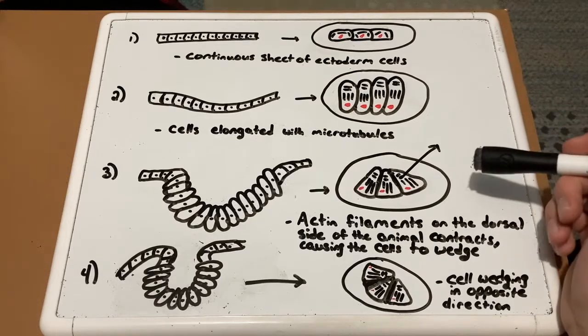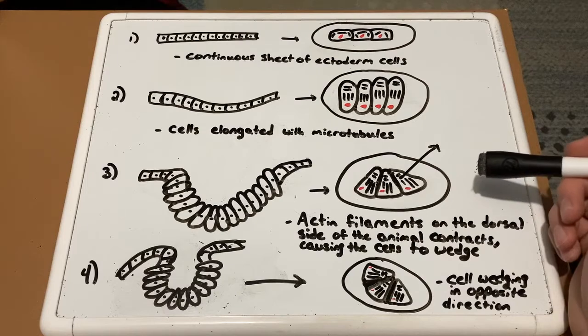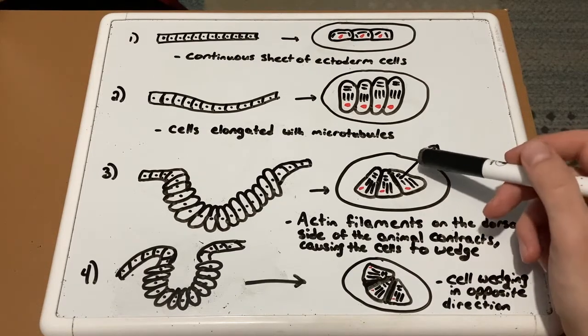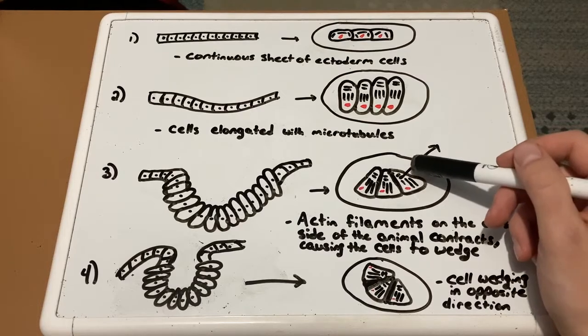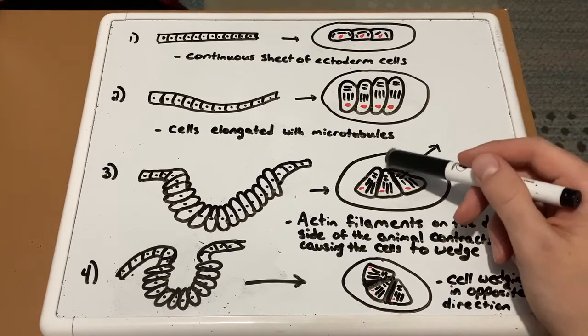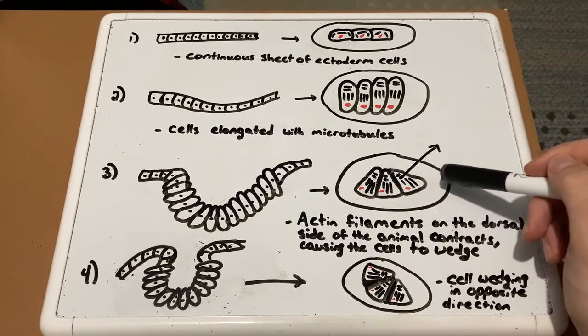And now in the third picture, you're going to see actin filaments on the dorsal side of the organism contracts, causing the cells to wedge. So again, the actin filaments, which are seen here, they're contracting or getting smaller. And because of that, it's causing the top of the cell to contract. And it causes these cells to what's known as wedging.